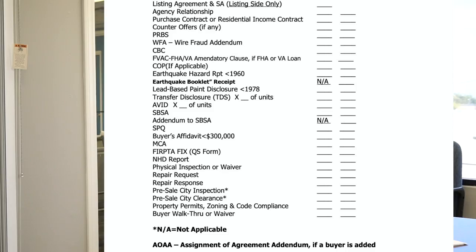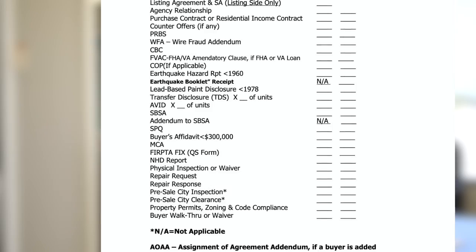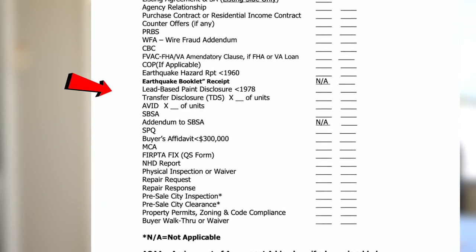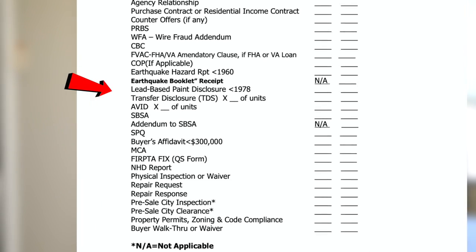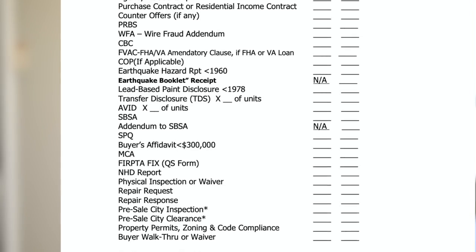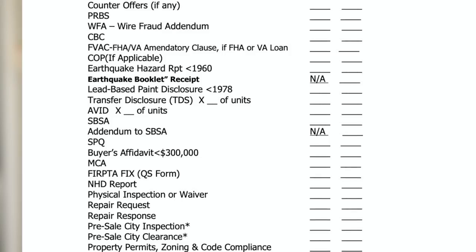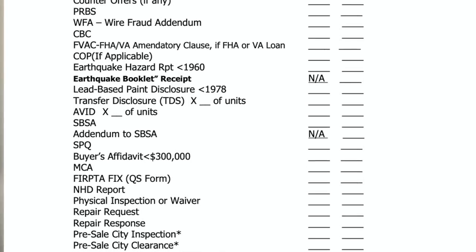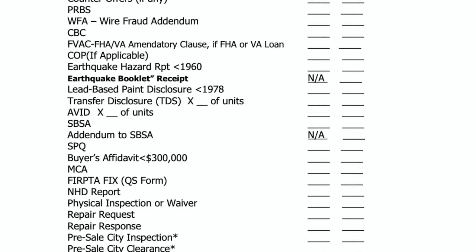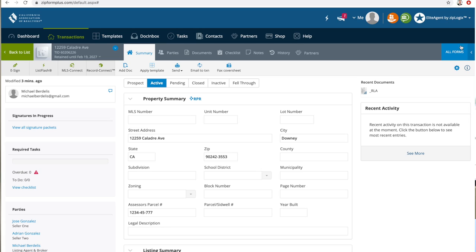I happen to have a cheat sheet, and you too can get the cheat sheet — here it is on the screen. As you can see, you have the earthquake form, the lead-based paint, the TDS, the AVID, the SPSA, the SPQ, the MCA, the AS which is the FERPTA, and the addendum to the SPSA. Let's select them — go to all forms on the right and select them one by one.